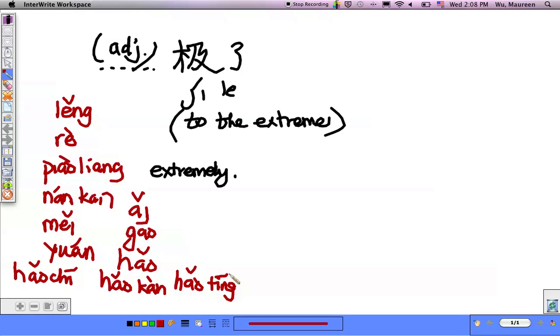So we could also have, if 难看 is ugly or not good looking, what do you think the opposite of 好吃 is? 难吃, it's difficult to eat, like remember, 难看, ugly is difficult to look at, 难吃, difficult to eat, 很难吃, disgusting tasting, right?